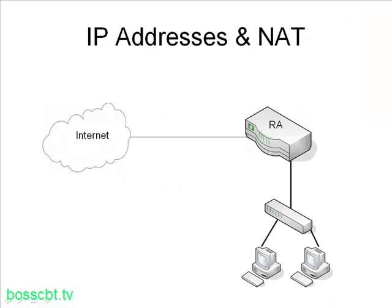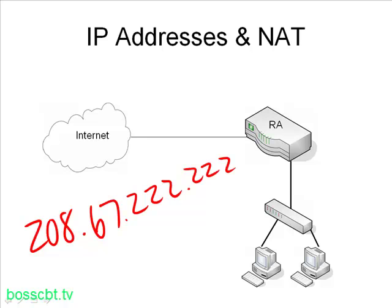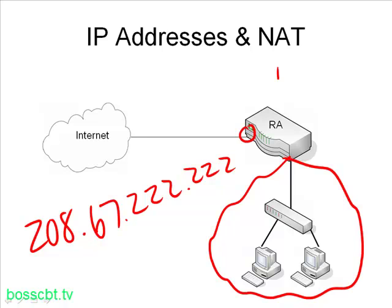We can illustrate the idea of using private and public IP addresses and NAT all together simply in this diagram. Let's say this is your company and you have a public IP address — for example, 208.67.222.222. You can assign that IP address to your router, which then connects to the Internet. However, on the inside of your network, you can use a private IP range — let's say 10.0.0.0, subnetted as a slash 24. So each one of these PCs has an IP: that's .1, that's .2, the router is .3.